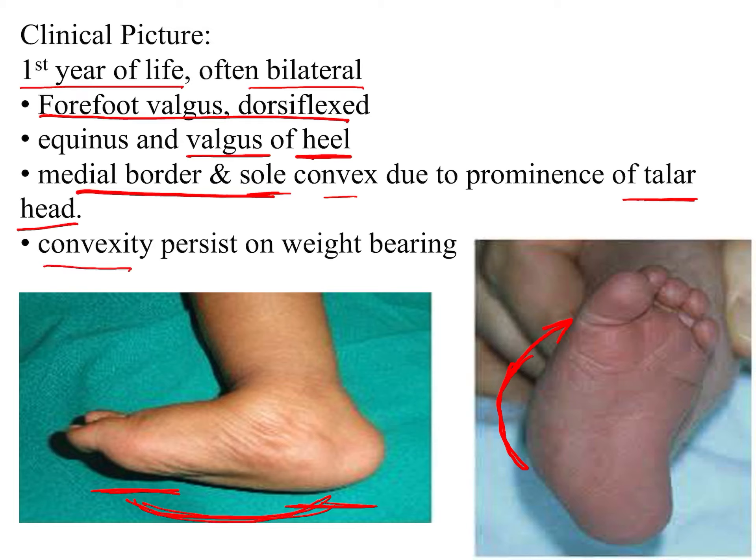This convexity persists on weight bearing, leading to the rigid flat foot deformity. On the dorsal surface, there are deep skin creases over the anterior aspect of the ankle, and a dimple might be seen on the anterolateral aspect. Ankle plantar flexion is rigid and restricted due to the bony cause, and there may be callus formation on the heel and sole region from weight bearing.